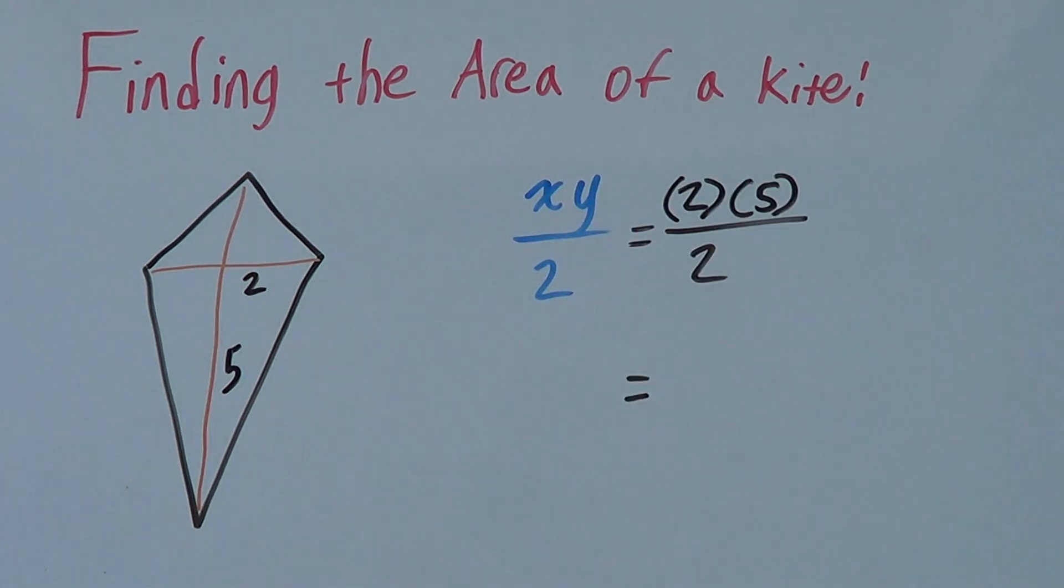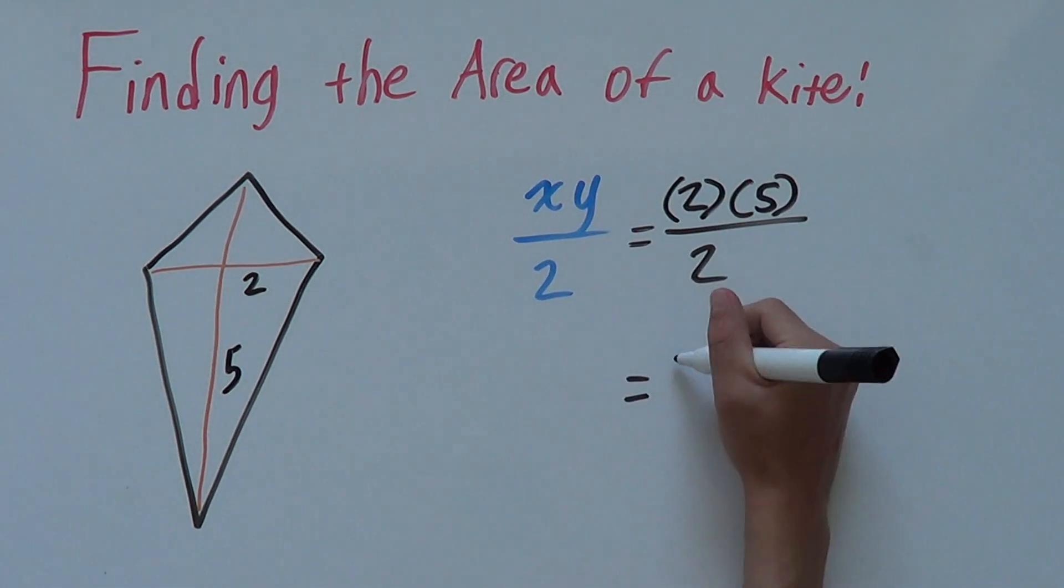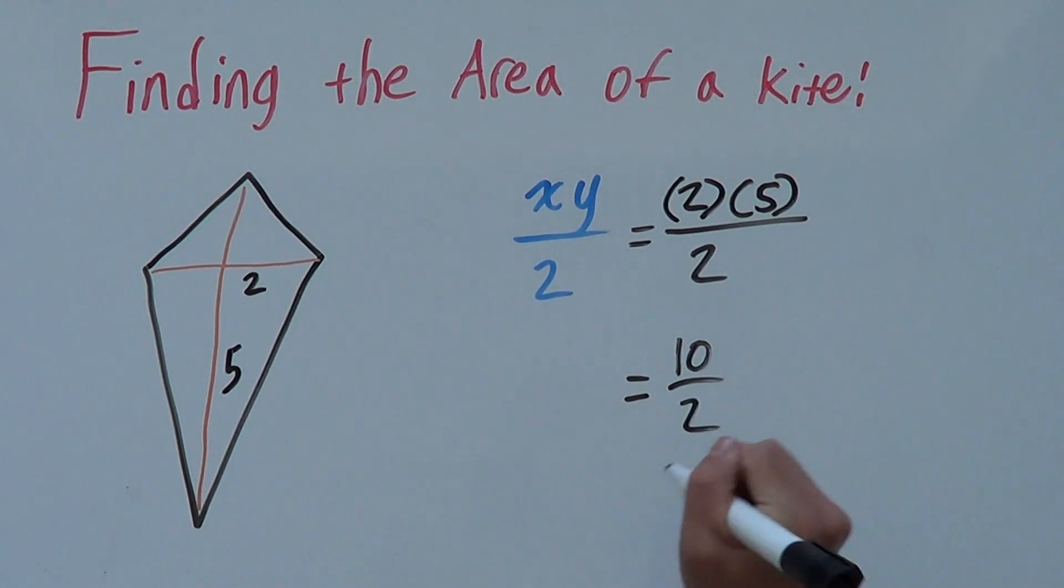We times together our 2 and our 5 to give us 10 over 2. And then, we simplify 10 over 2 to 5.